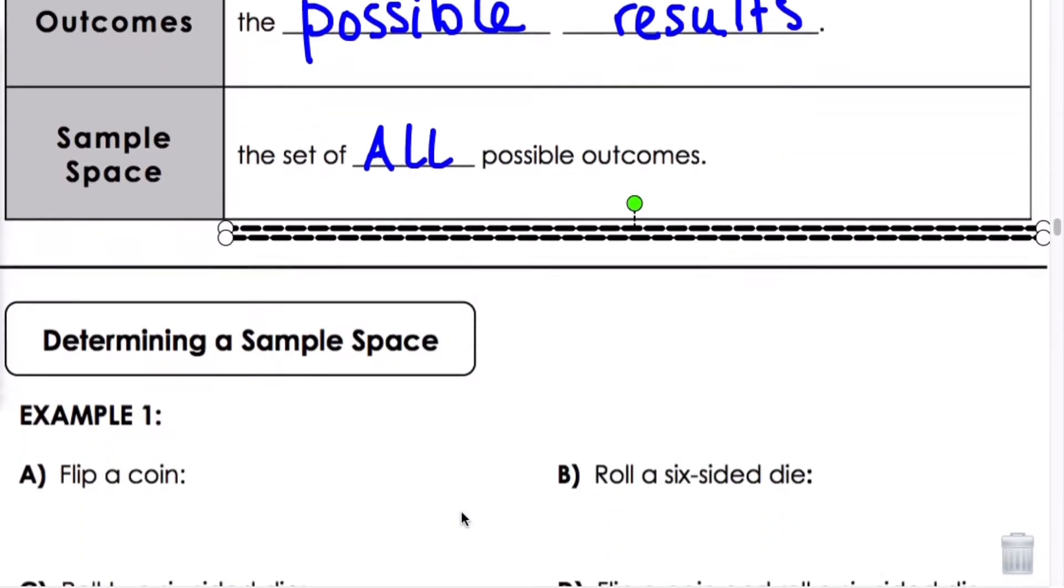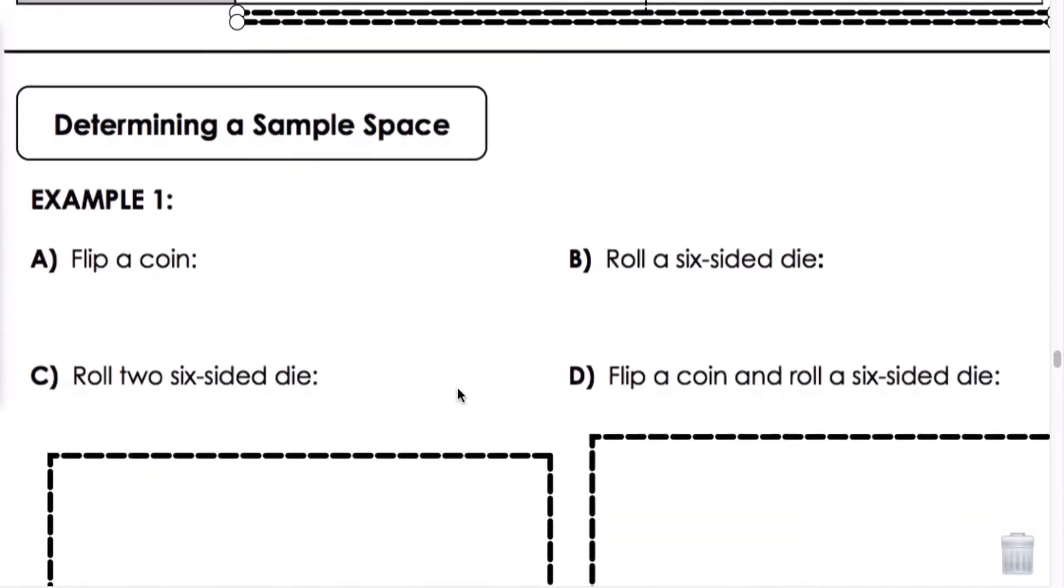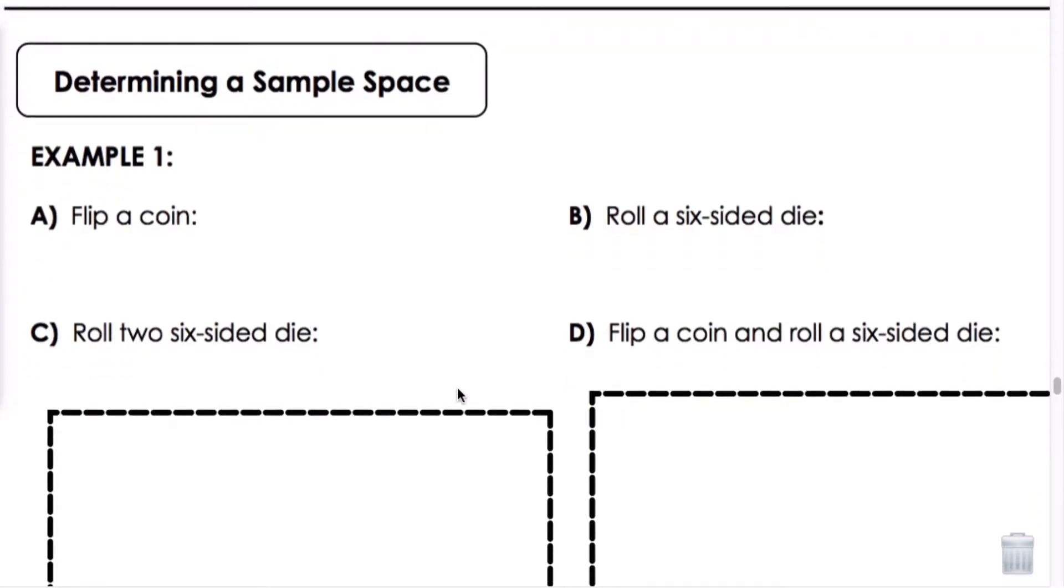Determining the sample space. Example one: if we're going to flip a coin, we need to think what's our sample space. Remember that is all possible outcomes. We know for a coin, the sample space is going to either be heads or tails. So we know there are two possible possibilities, so our sample space is two.